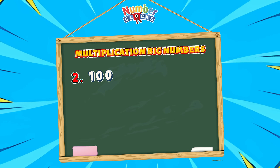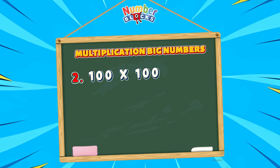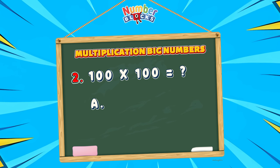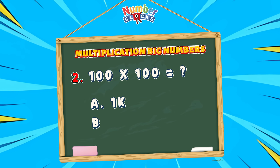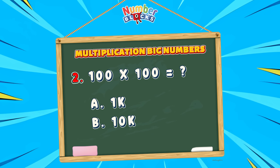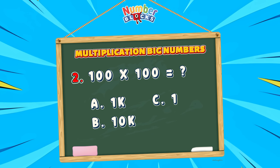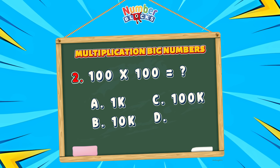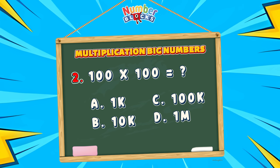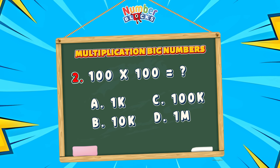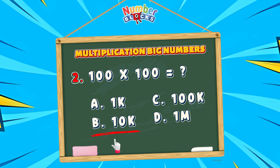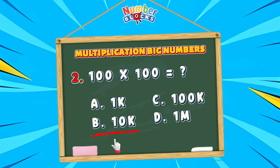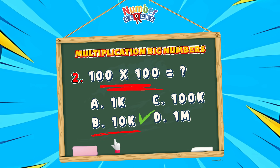Question number 2: 100 multiplied by 100 is equals to... A, 1,000. B, 10,000. C, 100,000. Or letter D, 1,000. The right answer is letter B, 10,000. 100 multiplied by 100 is equals to 10,000.